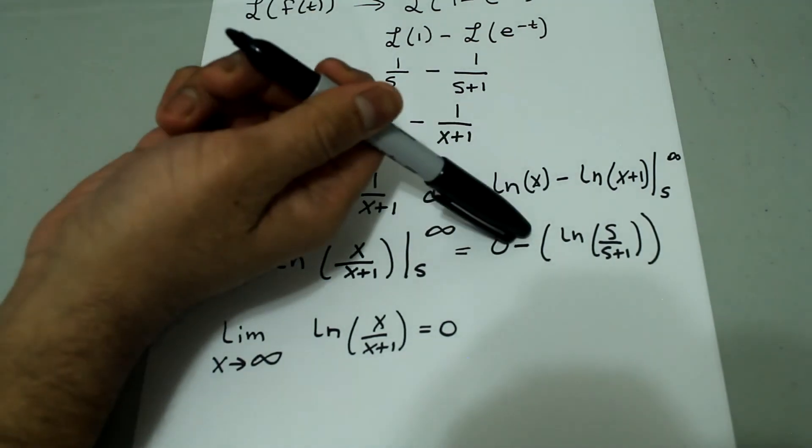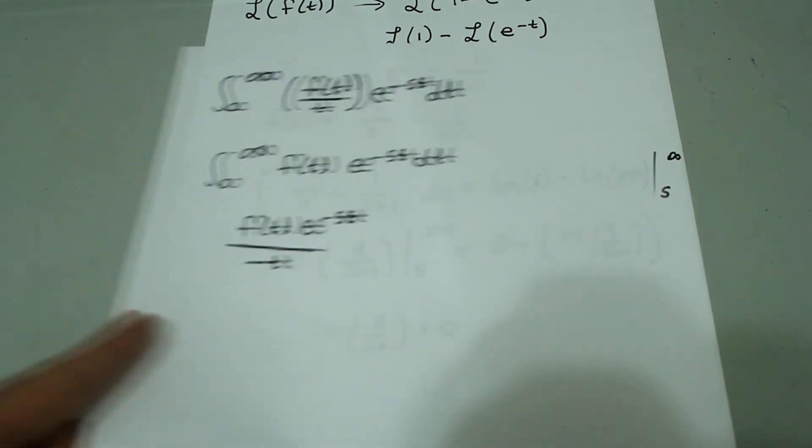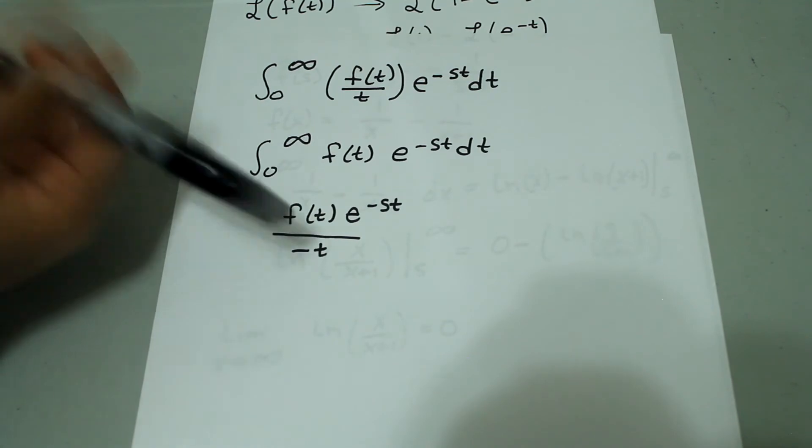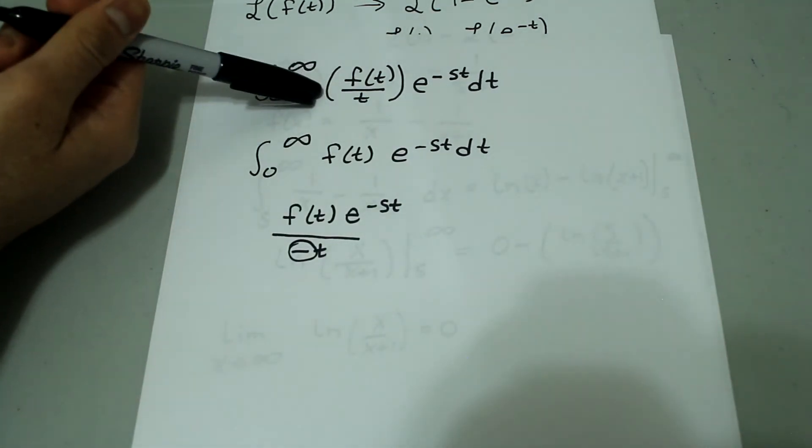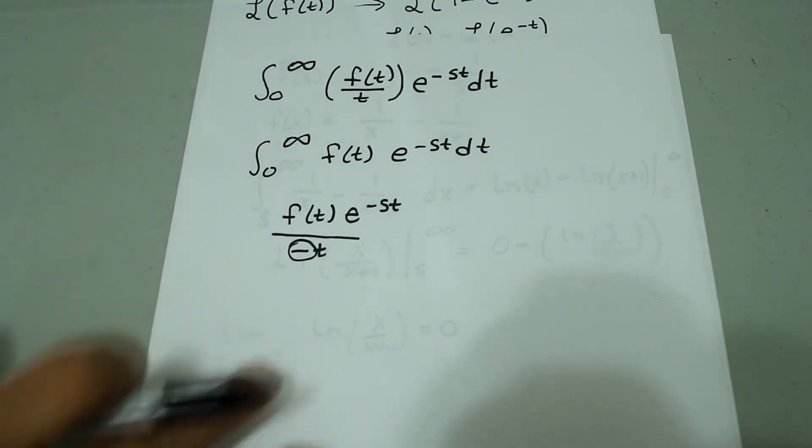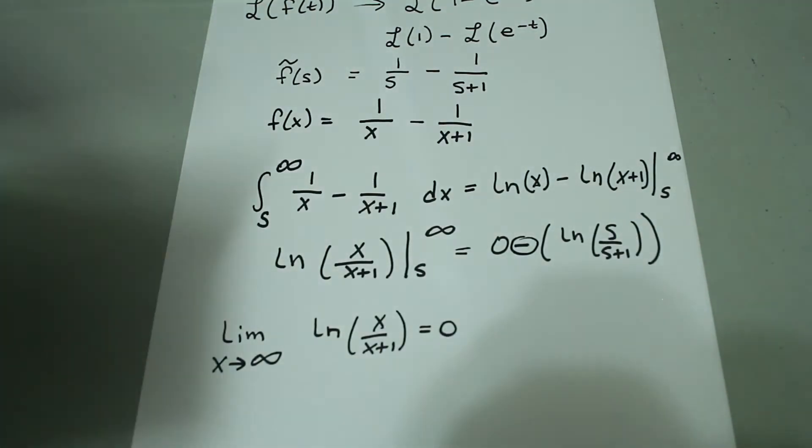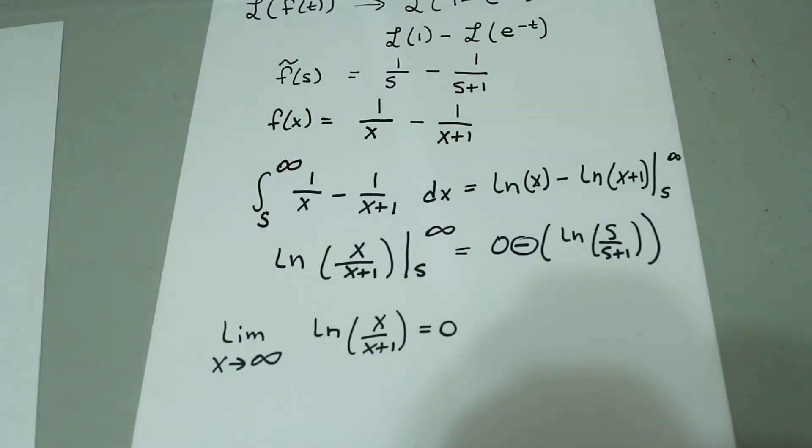Notice that there's a negative sign here. And remember that when we said, when we integrate the Laplace transform of f of t, we get this additional negative sign with this. So, this negative sign here takes care of this additional negative sign. So, that's why s is the lower bound.